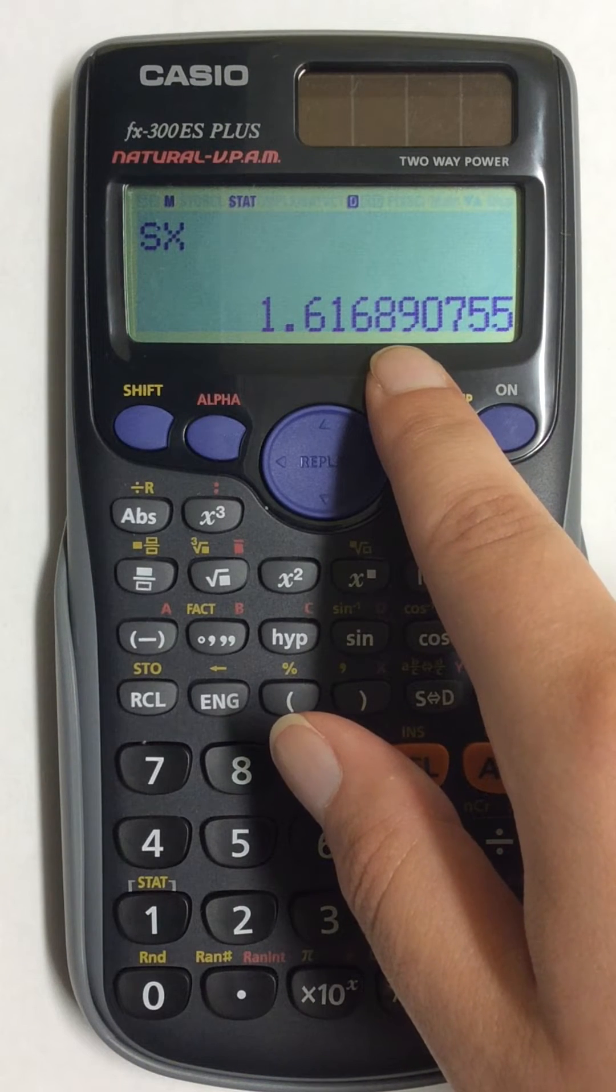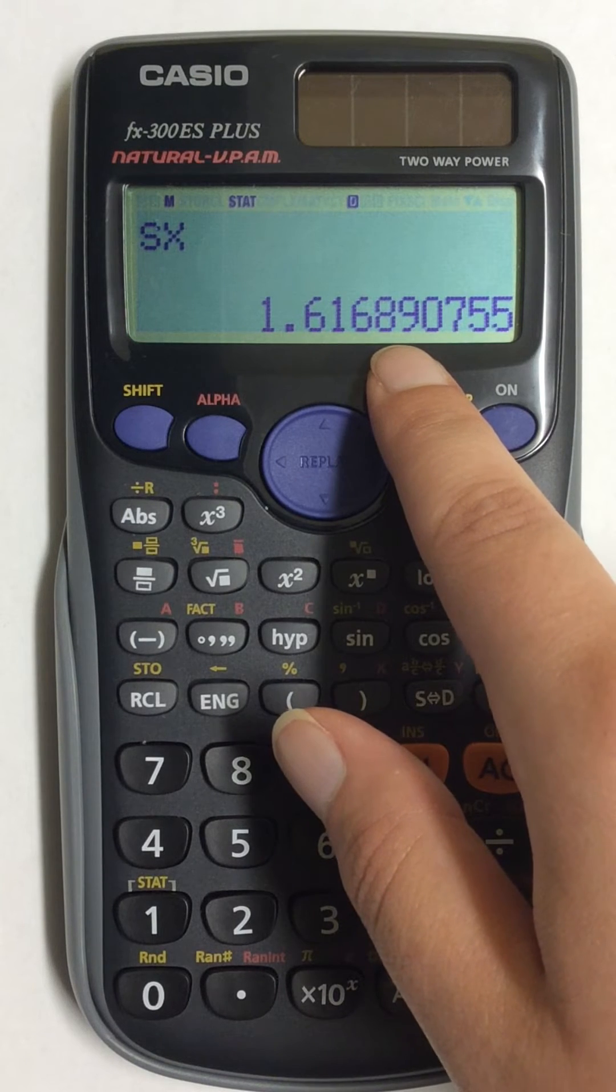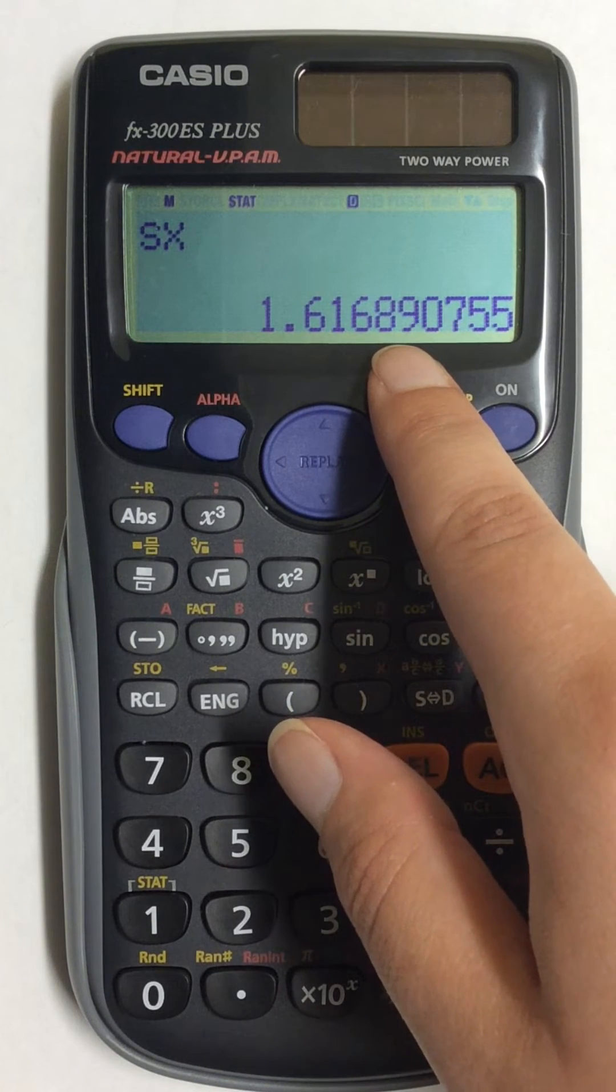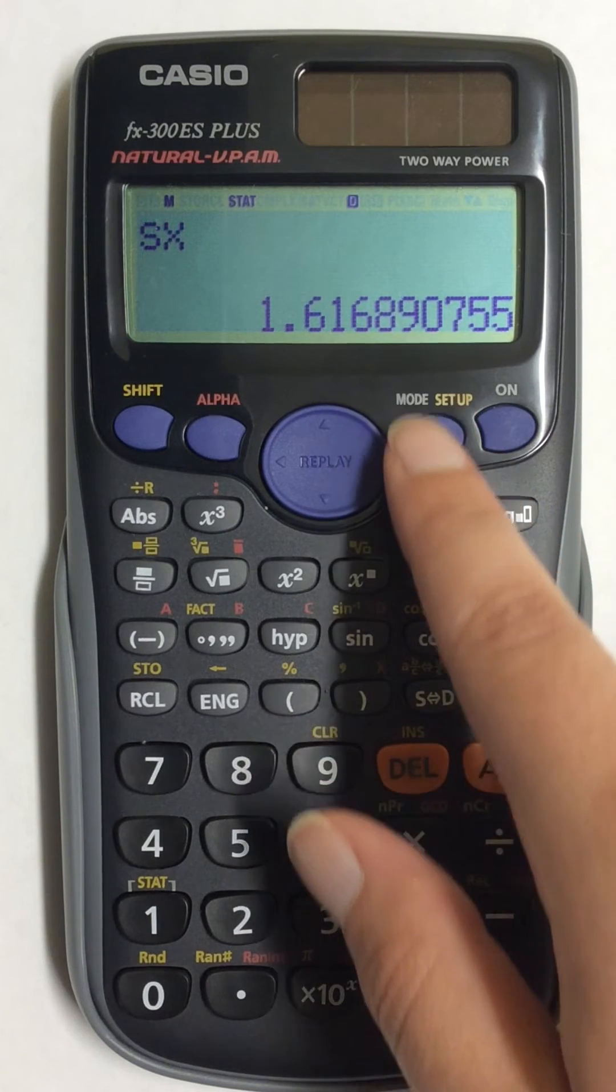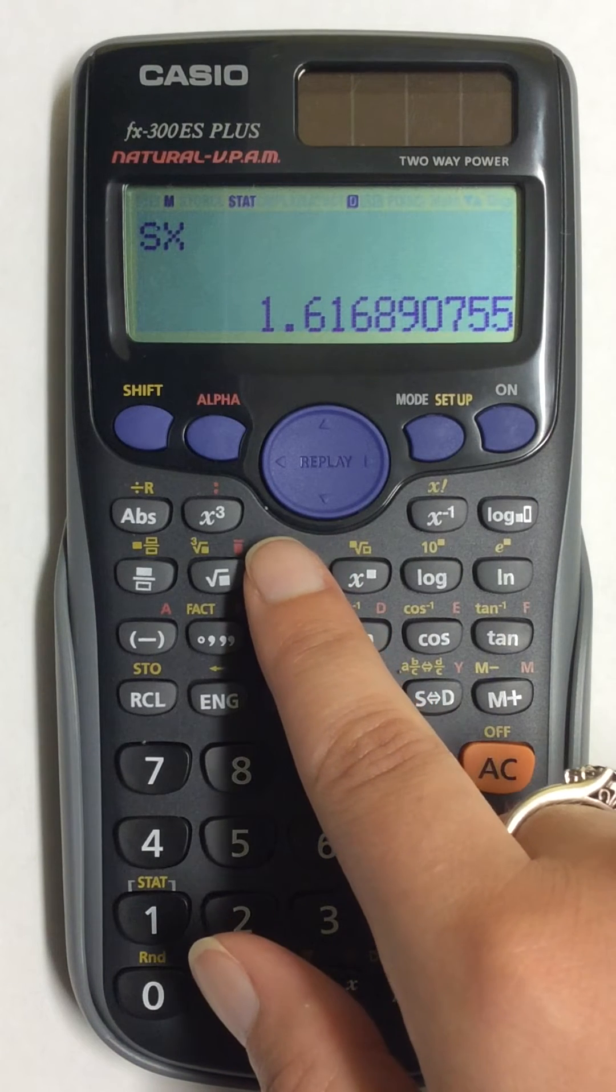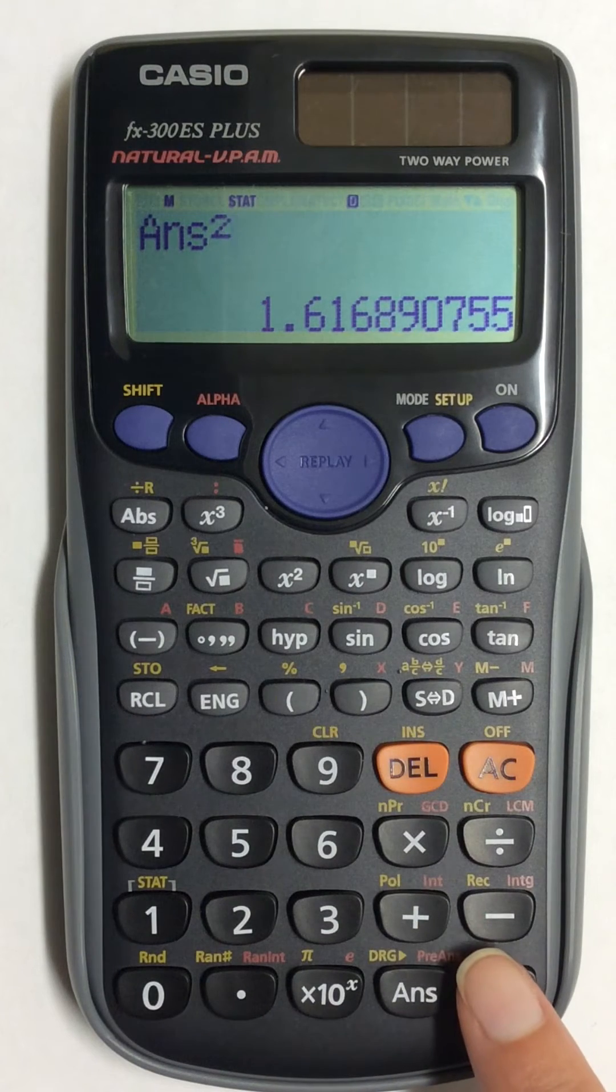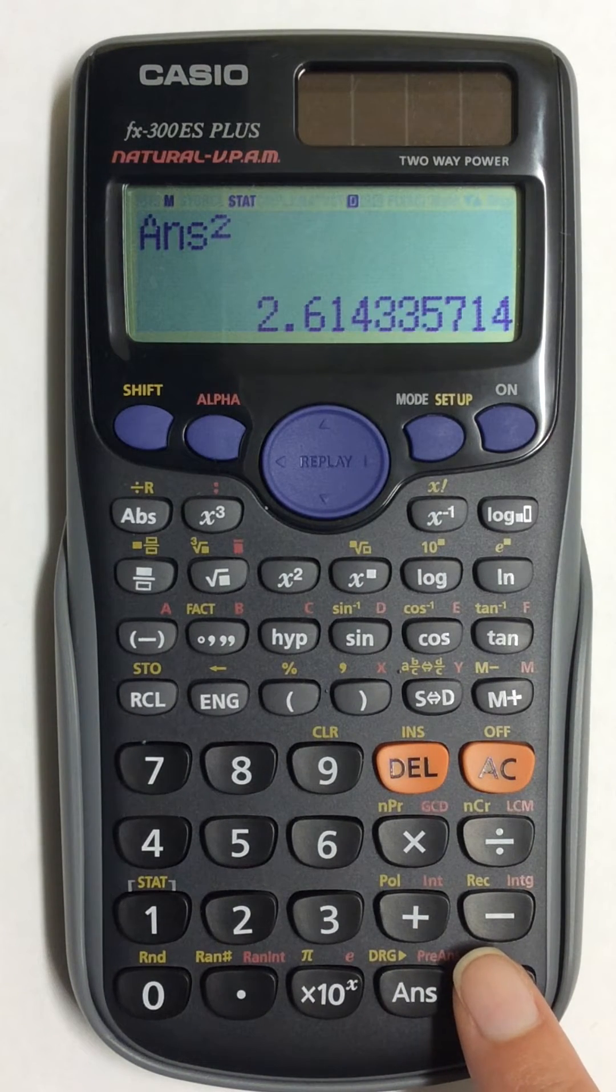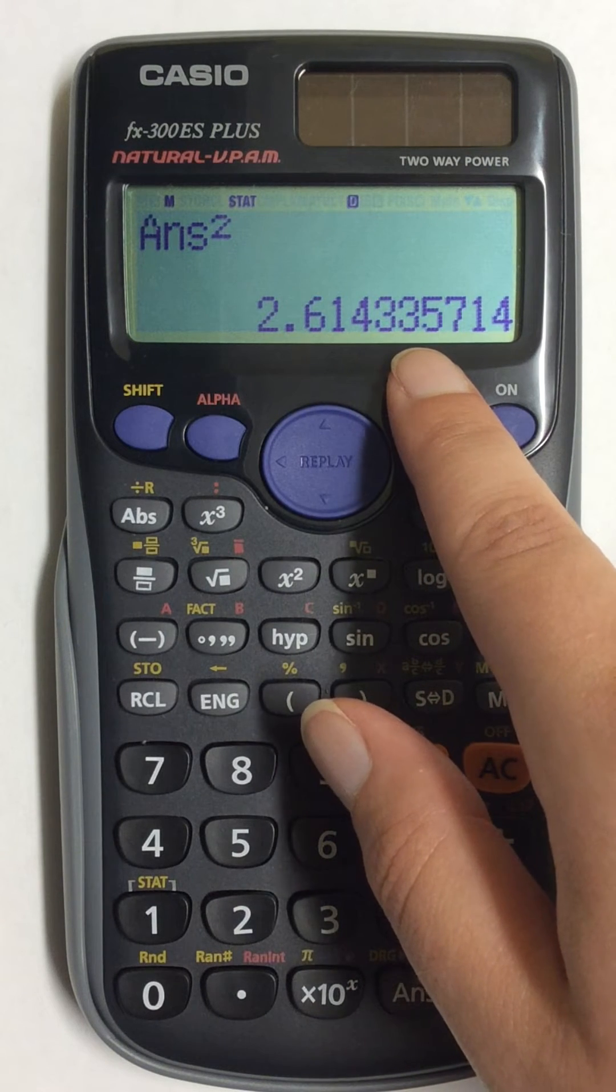If you wanted or needed to find variance, variance is simply your standard deviation squared. So all you would have to do is come down here to your squared button and press that and then hit equals. This number on your screen is now variance.